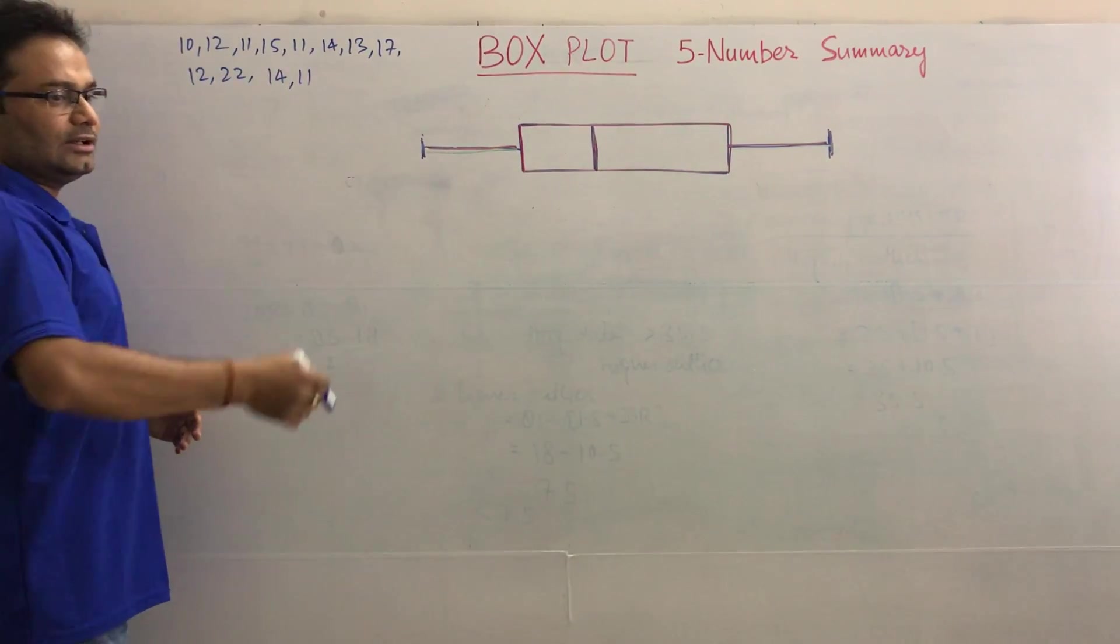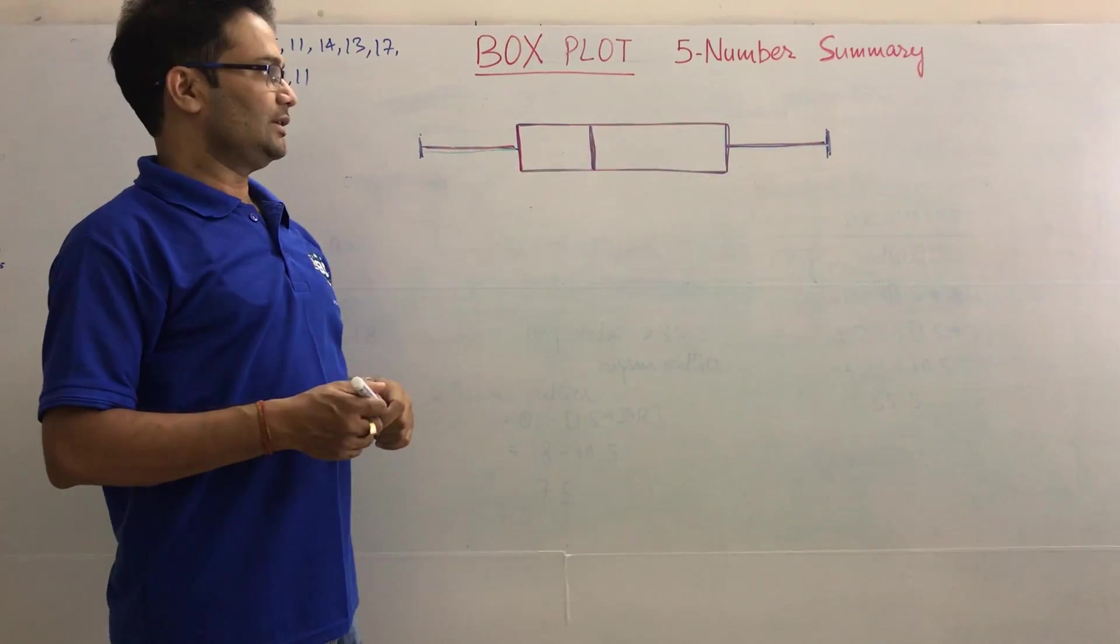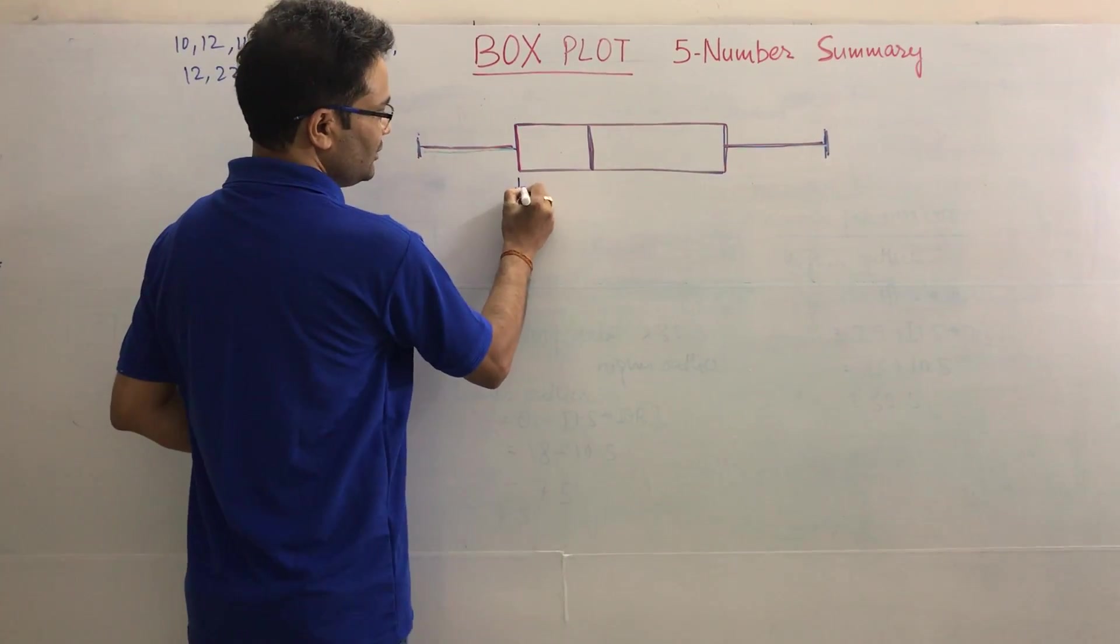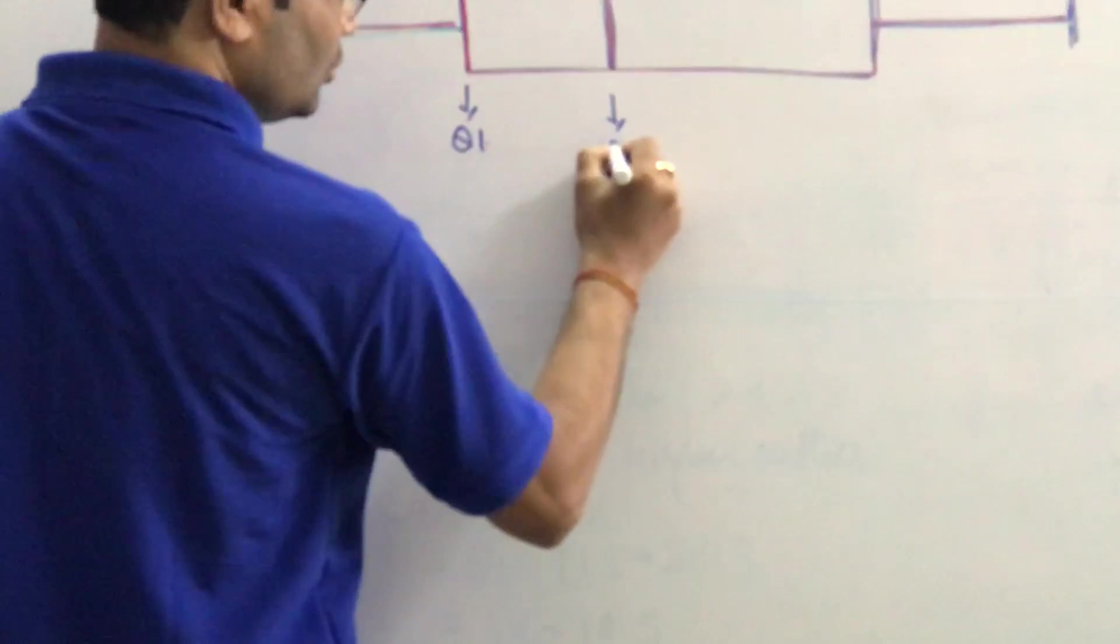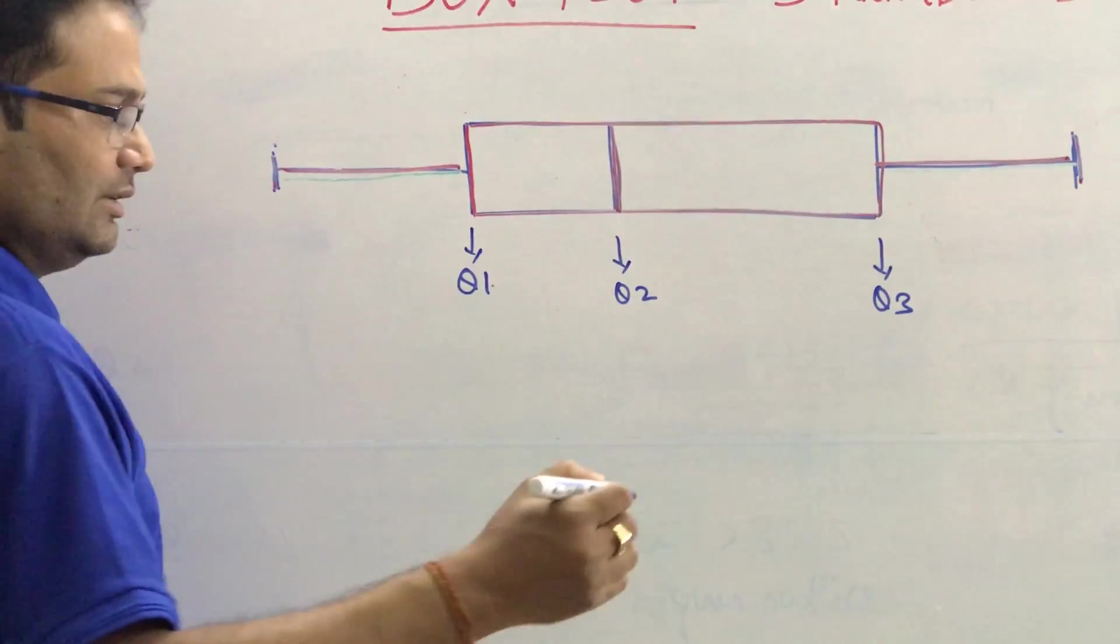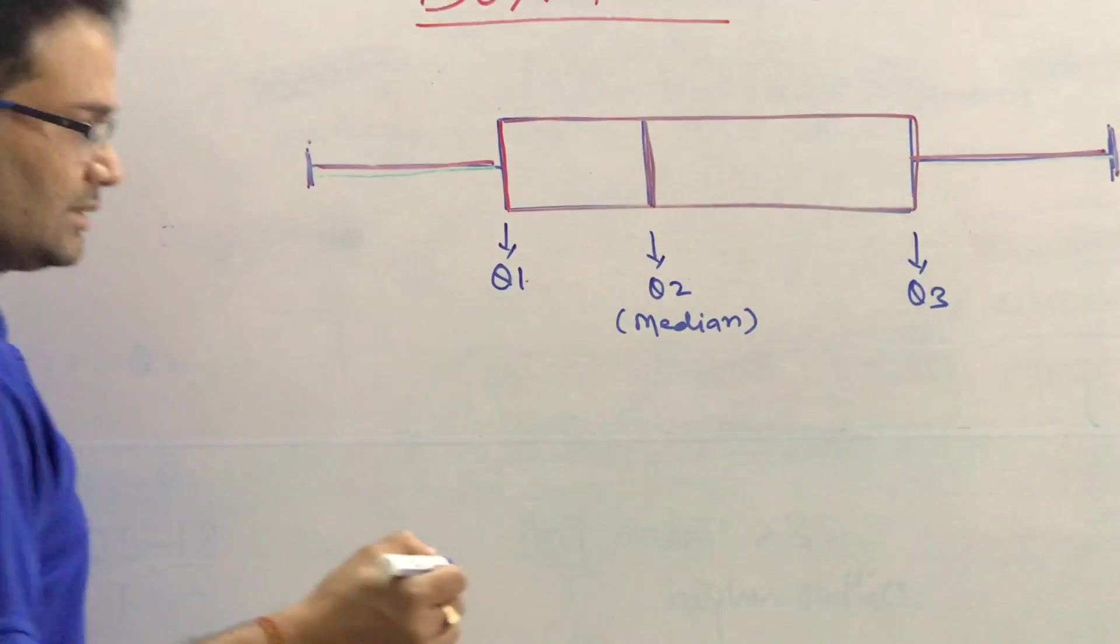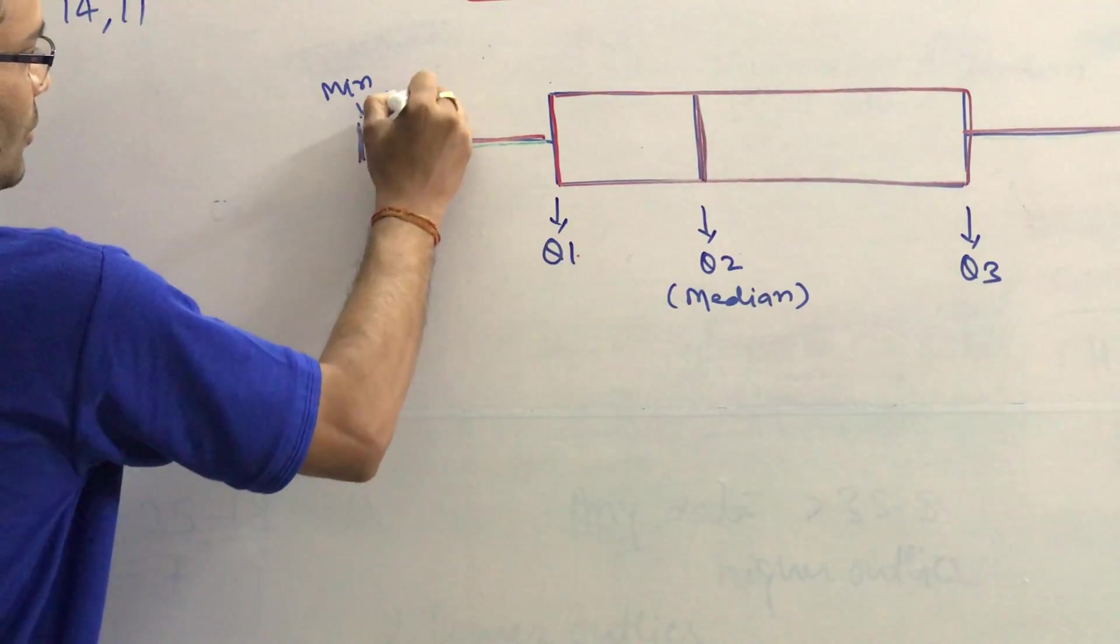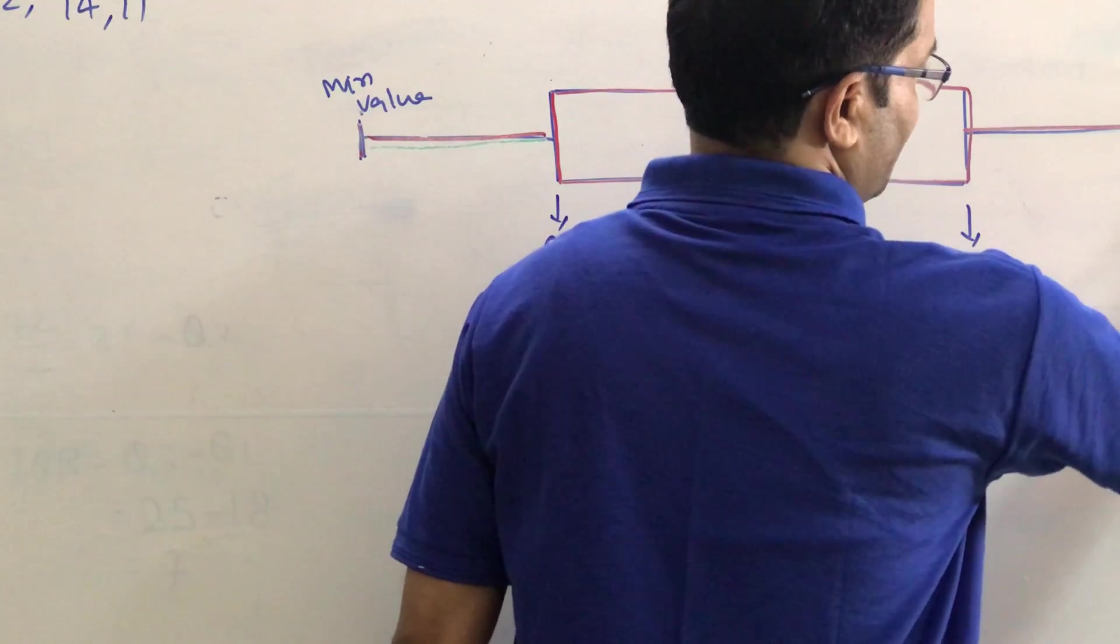If this is the data set and you want to know all about the five number summary, the box plot will show you Q1 (quartile 1), Q2 (quartile 2), and Q3 (quartile 3). Q2 is also called the median of the data set.